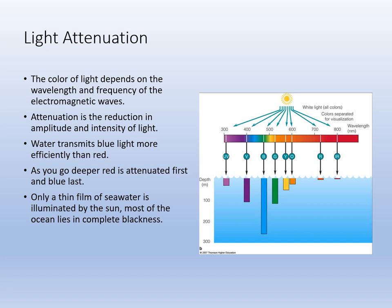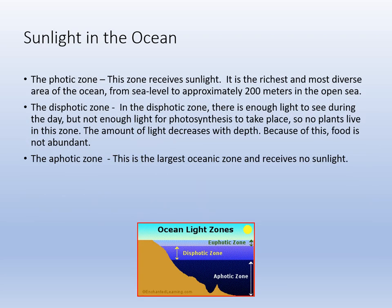You can see in this image that blue light penetrates the deepest — and what color does the ocean appear? Blue. Not a coincidence. Red light is filtered out first. So you have three zones: the euphotic (or photic), the dysphotic where there's enough light for vision but not enough for photosynthesis, and the aphotic zone. By the way, 80% of the organisms that live in the aphotic zone make their own light by bioluminescence.